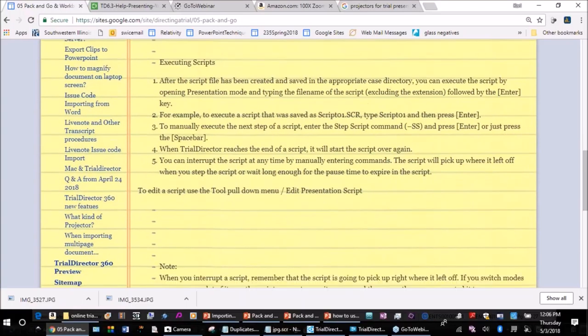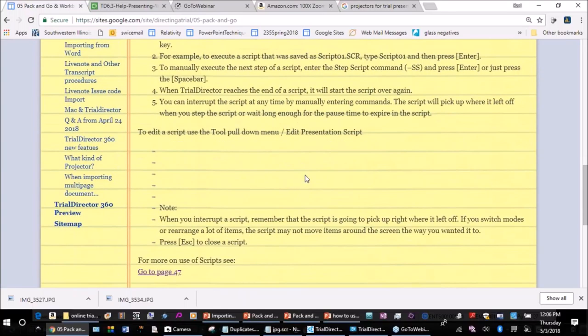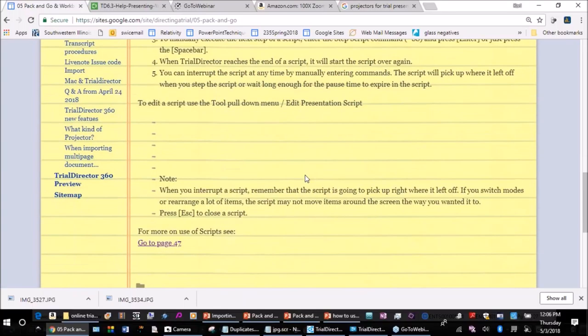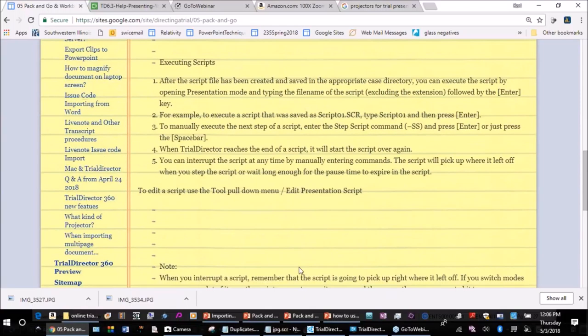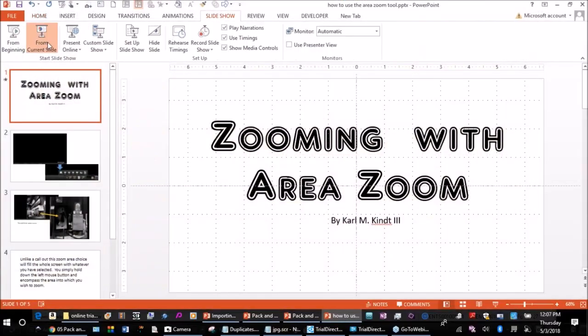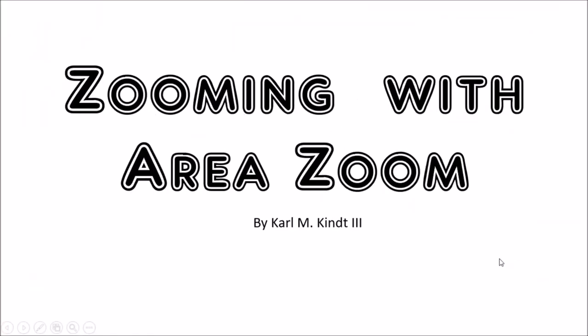I'll give you some tips on how to interrupt scripts when you don't want them to run anymore. There's also a link to a quick start PDF file provided by iProof that goes through those steps. But let's first take a look at that zoom issue — so zooming with what is called the area zoom tool.